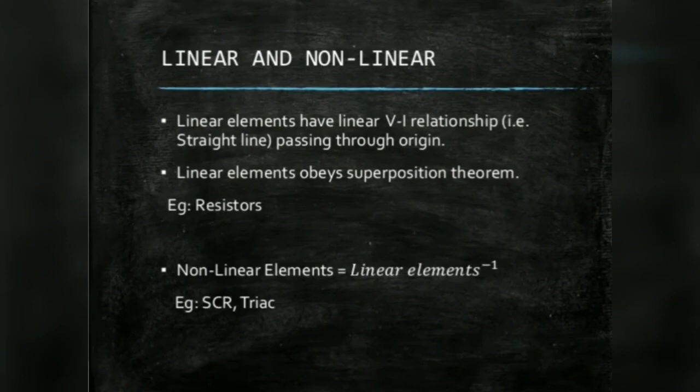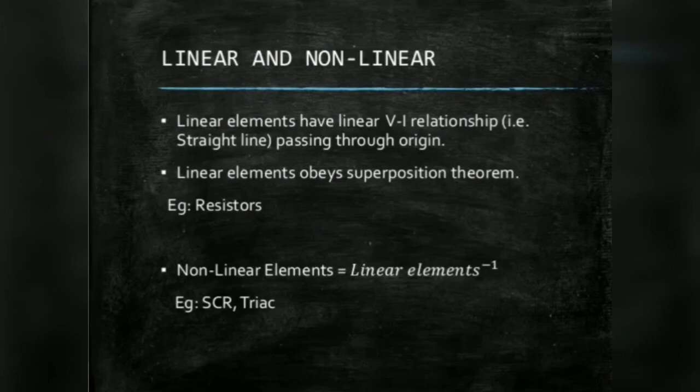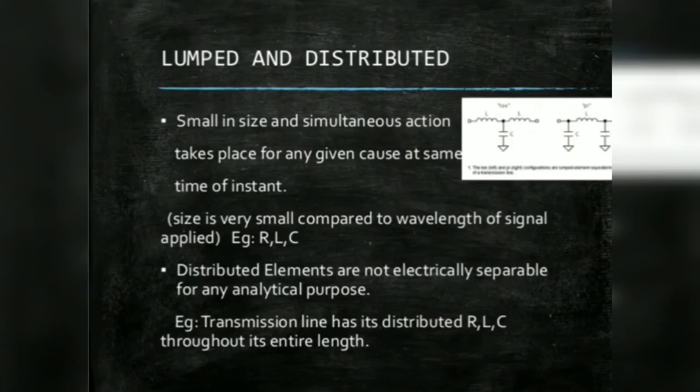Linear elements have a linear voltage-current relationship like a straight line passing through the origin, and they obey the superposition theorem. A resistor is a linear element — we can predict the current value for a given voltage. Nonlinear elements include SCR, triac, diac, and other power electronics devices like transistors.